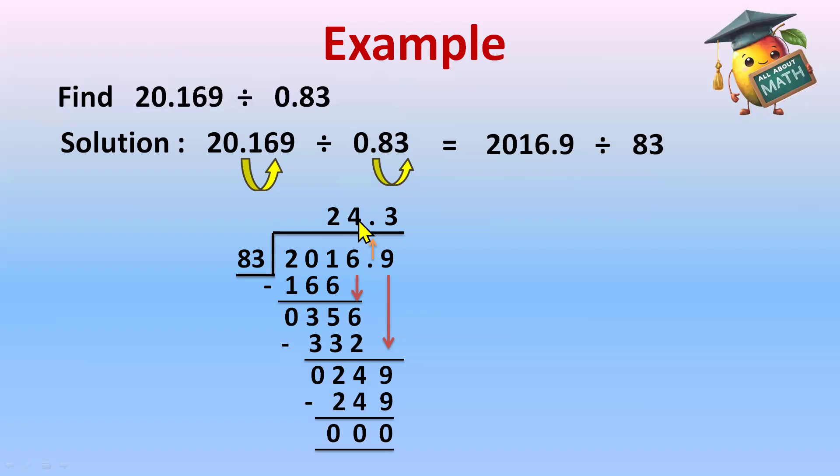So the answer is 24.3. So for division 20.169 divided by 0.83, the answer will be 24.3.